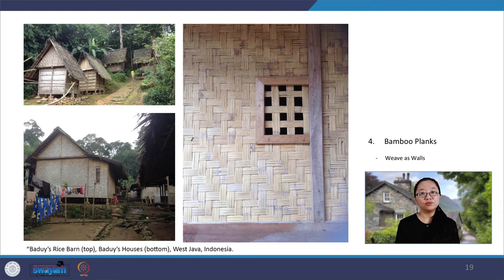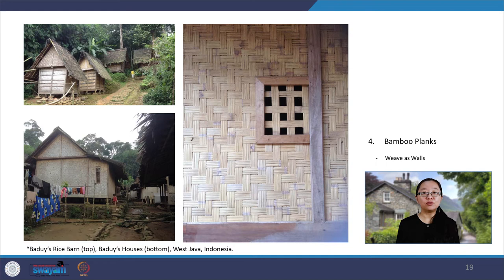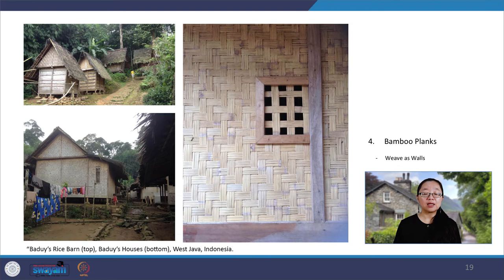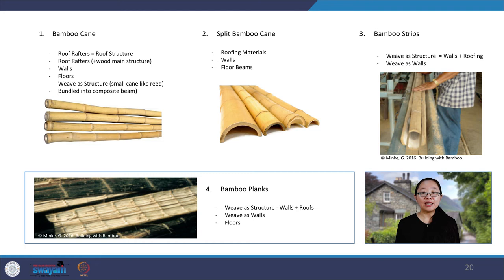Woven bamboo planks have been widely used without plaster in rural houses in tropical climates, such as the Badui tribe in West Java, who use woven planks for walls of their rice barn as well as their house, with a main structure of wood. The weave pattern varies from one vernacular society to another. Woven bamboo planks are also found used with plaster in some colonial houses in urban settings throughout Indonesia — a combination believed to be an adaptation of wattle and daub construction in Europe. We have seen varieties of bamboo uses in vernacular architecture: bamboo canes, split bamboo, bamboo strips, and bamboo planks, used as roof rafters, walls, floors, composite beams, roof materials, and floor beams.